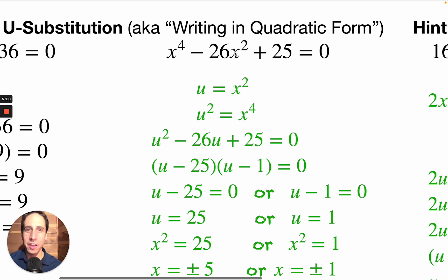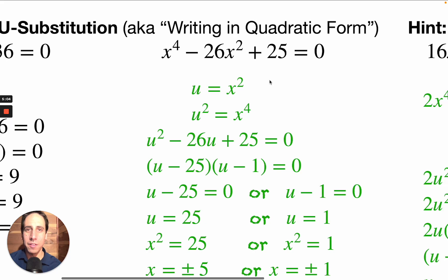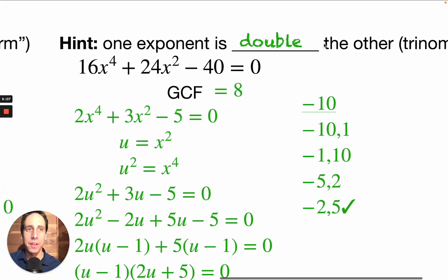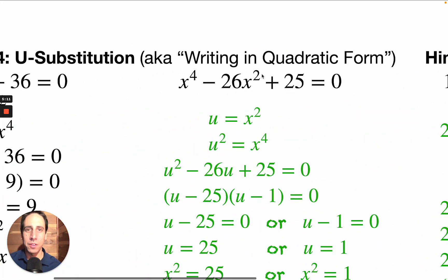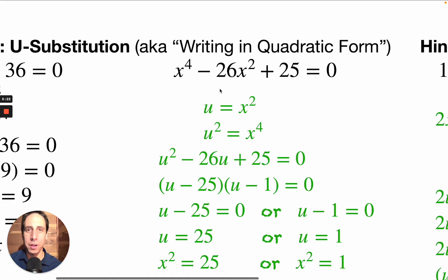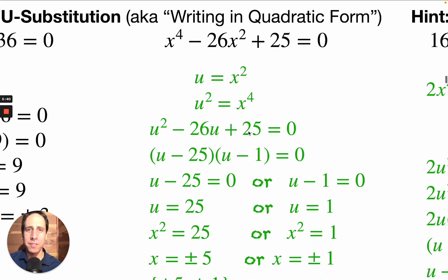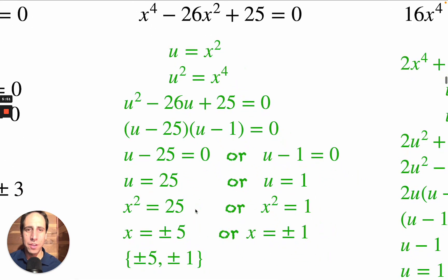Here I see x squared and x to the fourth — the hint is that one exponent is double the other, and it's a trinomial. So u substitution will work well. U equals x squared, and u squared equals x to the fourth. Now this is written as u squared minus 26u plus 25. What two numbers multiply up to 25 and add up to minus 26? That would be minus 25 and minus 1. Setting both equal to zero gives u equals 25 or u equals 1.